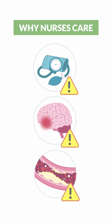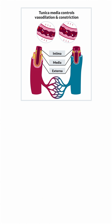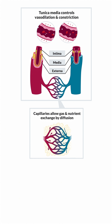Now, as a quick recap, the three layers to know are intima, media, and externa. Tunica media controls vasodilation and constriction. Capillaries, on the other hand, allow gas and nutrient exchange by diffusion.